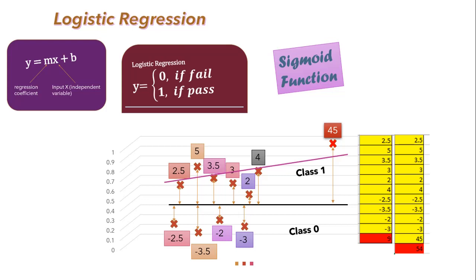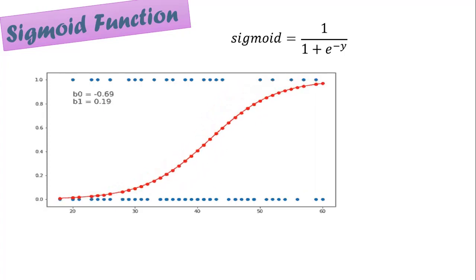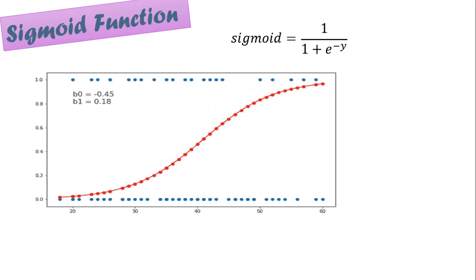Logistic regression uses the sigmoid function to transform linear regression into the logit function. The logit is nothing but the log of odds, and using the log of odds it calculates the required probability. The sigmoid function is a mathematical function with a characteristic S-shaped curve, with the formula 1 / (1 + e^(-x)).